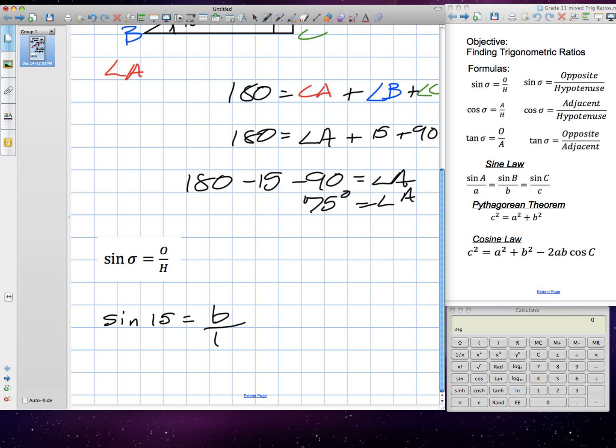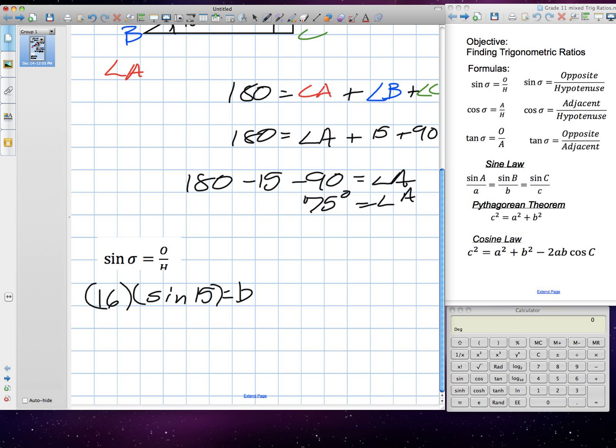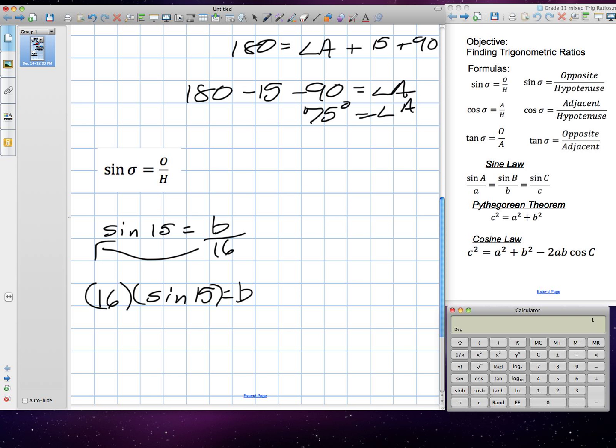We just need to isolate for B, so I need to bring 16 to the other side of the equation. We'll get 16 multiplied by sine 15 is equal to our side B. So, sine 15 times 16 is equal to 4.14. So, side B of the triangle is 4.14. Are we in meters? Meters.